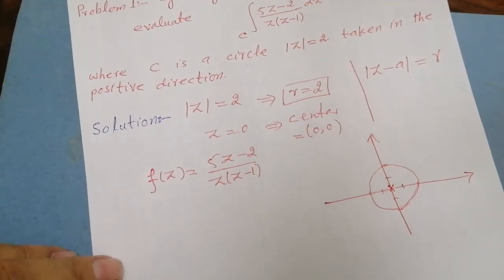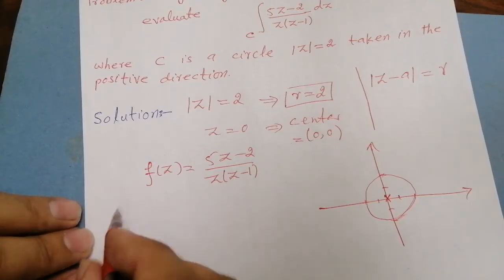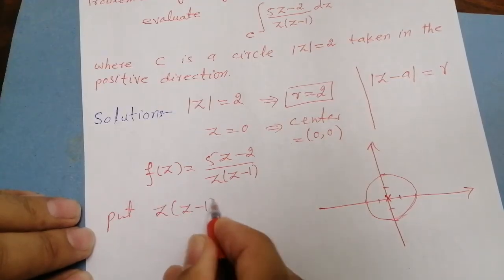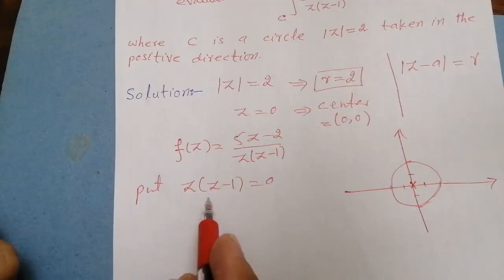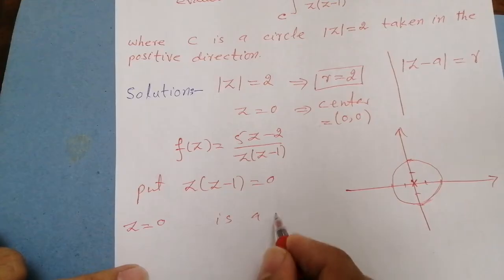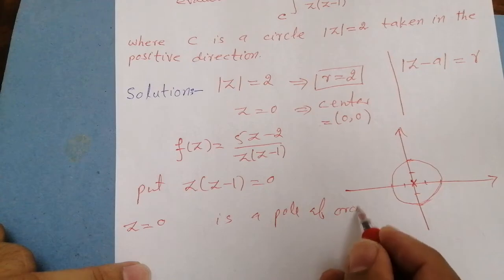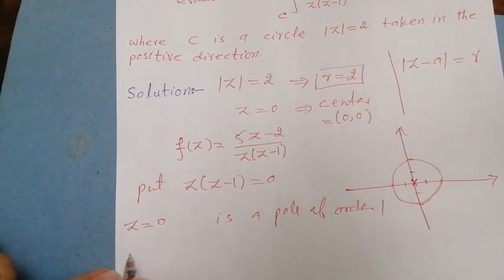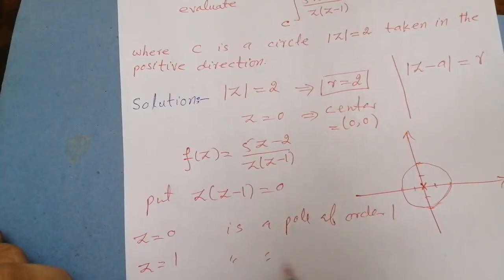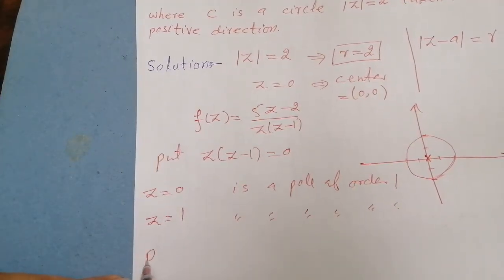To find the singular points, we set the denominator equal to zero and find its roots. From this, z = 0 is a pole of order 1, which is called a simple pole. Similarly, z = 1 is also a simple pole of this function. Now we have to find the residue at each of these points.